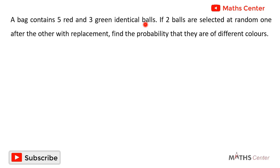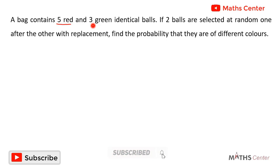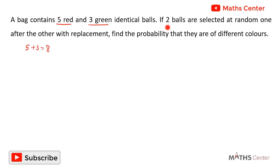A bag contains five red and three green identical balls. If two balls are selected at random one after the other with replacement, find the probability that they are of different colors. The total number of balls is the number of red balls (five) plus the number of green balls (three), giving us eight balls in the bag.